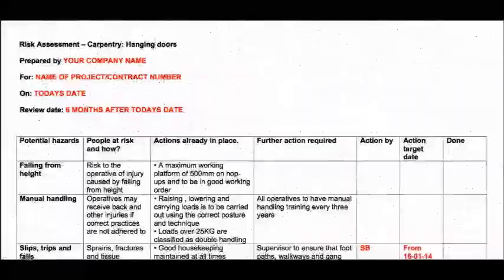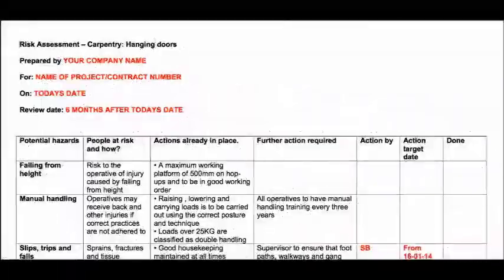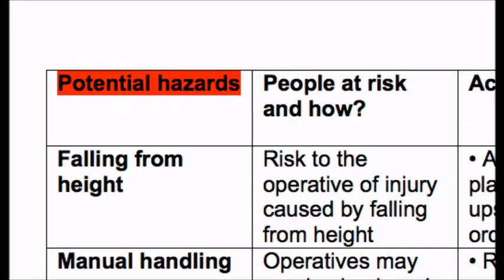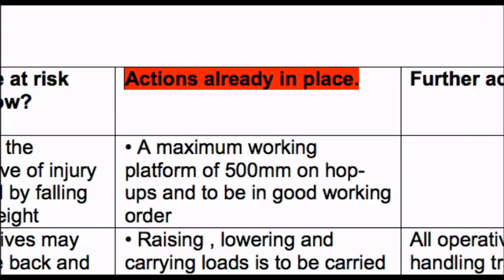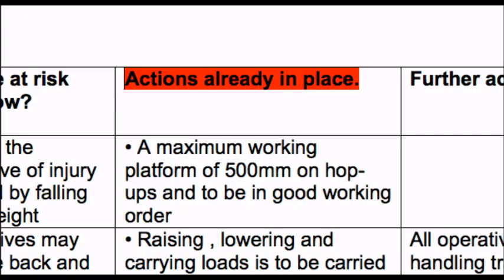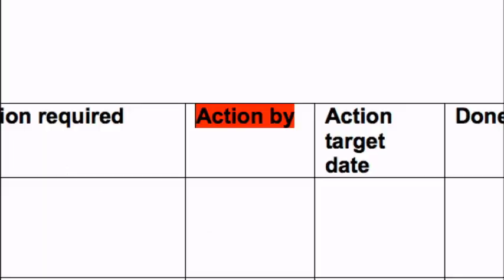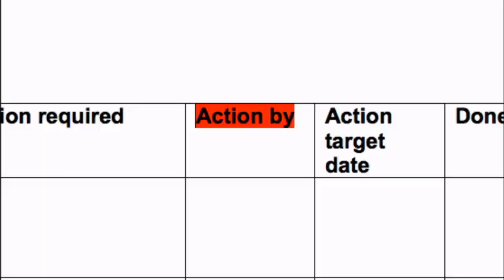The document I'm about to fill in shows us the hazards involved while carrying out a specific task. It shows us who's at risk, what actions are in place to reduce risk, and what further action is required. It tells us who should implement additional safety controls and when they should be implemented. As well as showing us the physical risks, this document also shows us the substance risks.